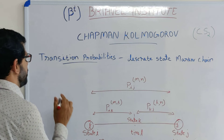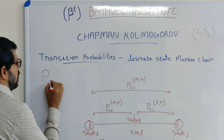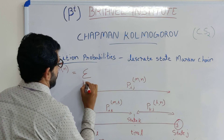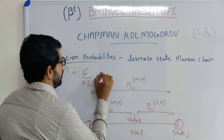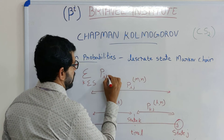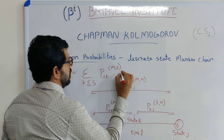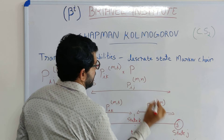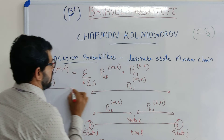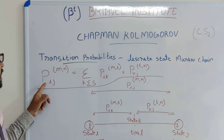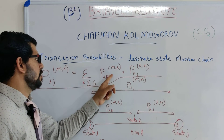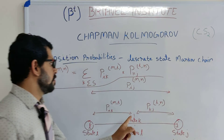So the Chapman-Kolmogorov equation is written as: P(I,J; m,n) equals the sum over all K in the state space S of P(I,K; m,L) multiplied by P(K,J; L,n). This represents the probability of going from state I to state J as the sum over all intermediate states K of the probability of going from I to K times the probability of going from K to J.